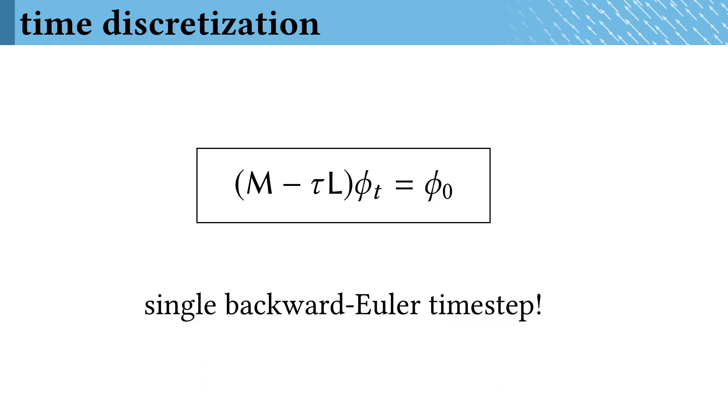With either of these operators, we can now evaluate heat flow via a single backward Euler time step, which amounts to just solving Ax = b.